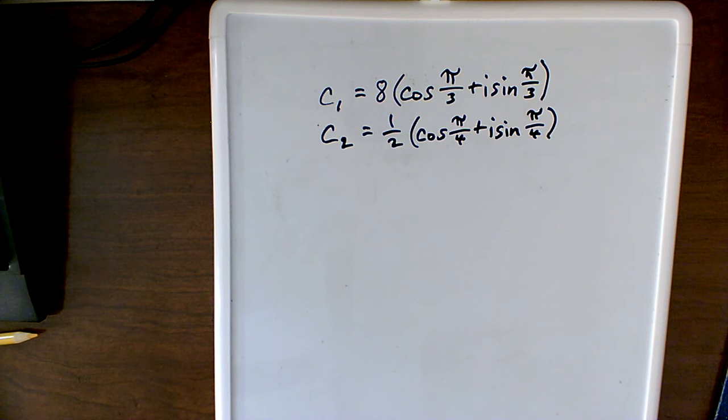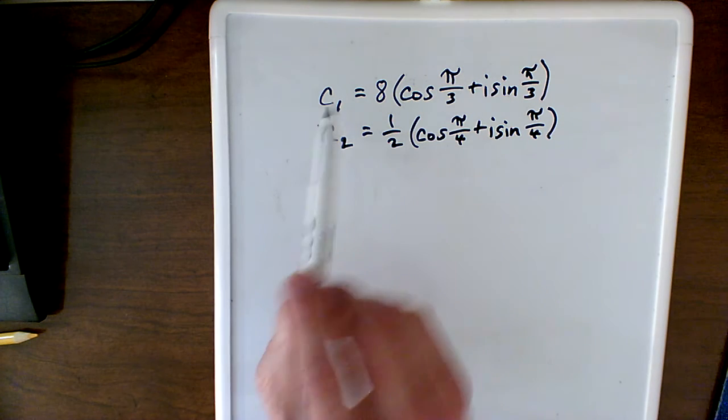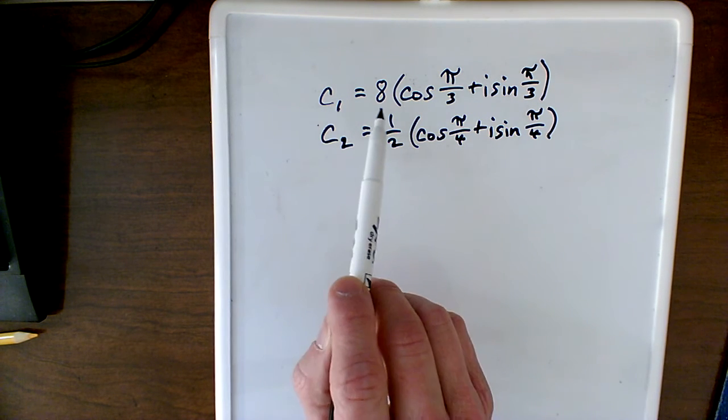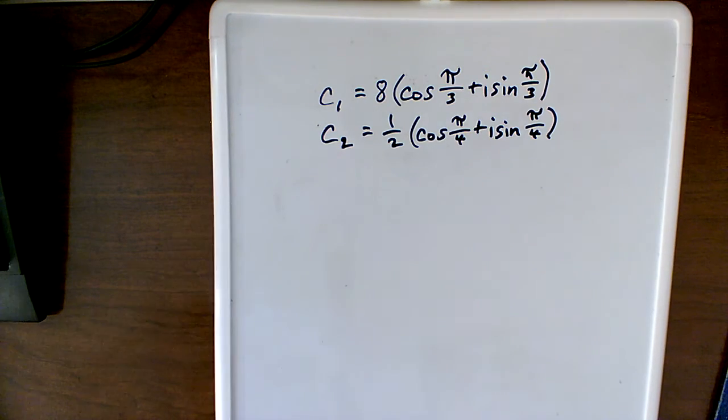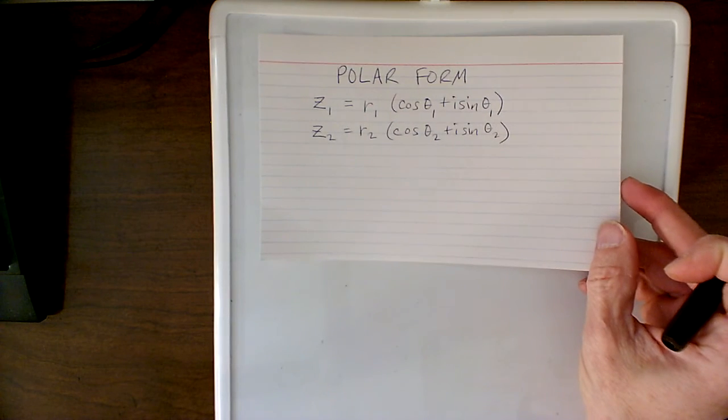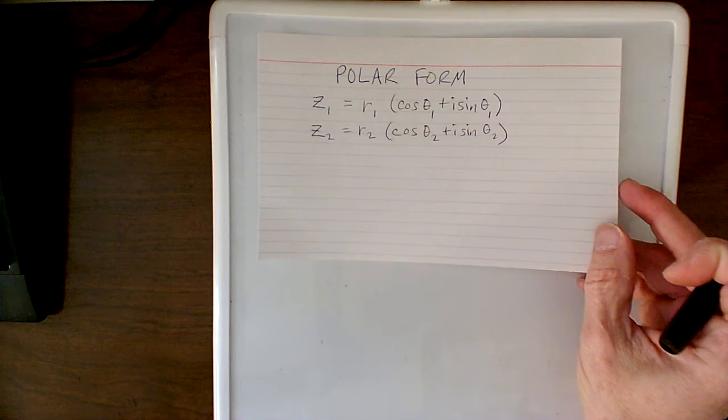Okay, so here's our example. We've got our two numbers. Instead of using z we're using c. So here's the form just like we were talking about before.